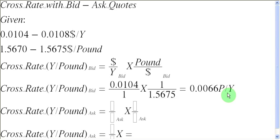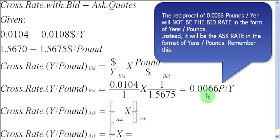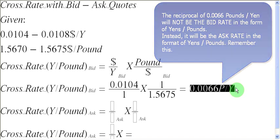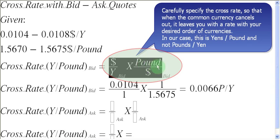You might wonder what is wrong in writing this quotation as 0.0066 pounds per yen. You might argue that if we take a reciprocal of this, it will return the same quotation in the format of yens per pound. But my friends, when you are dealing with bid ask quotations, this is not going to be so. Because if you take the reciprocal of the bid rate here, what you are going to get is the ask rate between yens and pounds, not the bid rate between yens and pounds. So this method cannot work. You have to specify the equation carefully so that when you cancel out the dollars, they leave you with yens per pound, not pounds per yen.